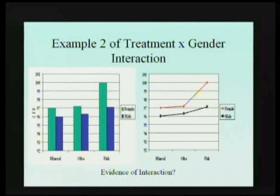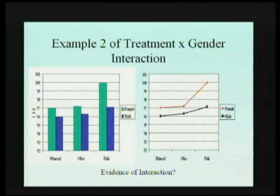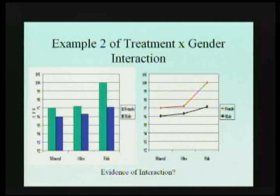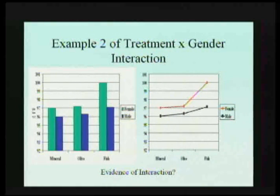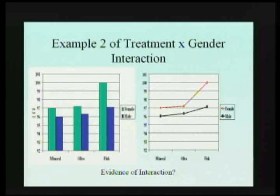Looking at the next example: males and females react pretty much the same way to mineral and olive oil, which isn't much of a response. But females appear to be responding much more to the fish oil. It actually doesn't look like fish oil is working very much for males, so this tells you that fish oil is much more effective for females — it's like doing market research to know what population to direct your treatment to.